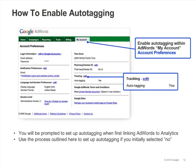To enable autotagging, select account preferences under My Account. Make sure that the tracking option reads yes. If it says no, click the edit link, check the box for destination URL autotagging, and click Save Changes. When linking your AdWords account to Analytics for the first time, you'll be prompted to automatically select destination URL autotagging and cost data import. If you want to change your autotagging settings later, you can do so by editing your AdWords account preferences.